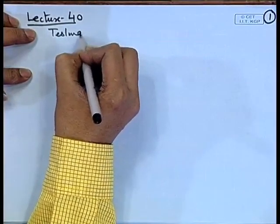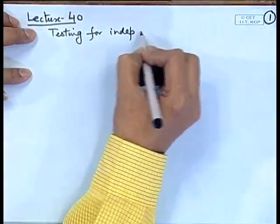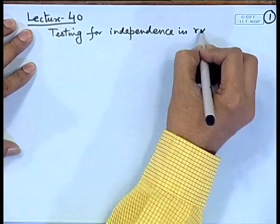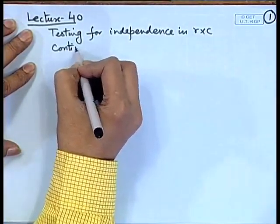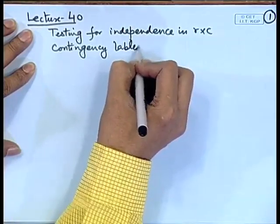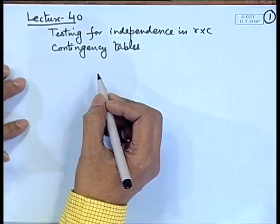There is another situation where we have data of the type which is categorical and we want to test whether the categories are independent. This topic we call testing for independence in R by C contingency tables. We may have R categories distributed in the rows and C categories represented in the columns. We have observed frequencies O_ij and on the basis of this we want to test whether the two categories are independent.